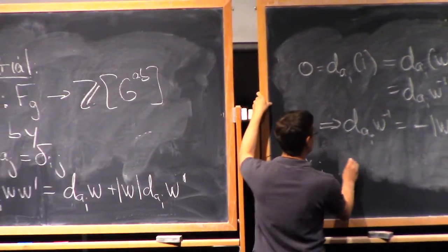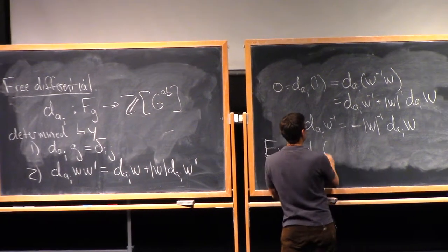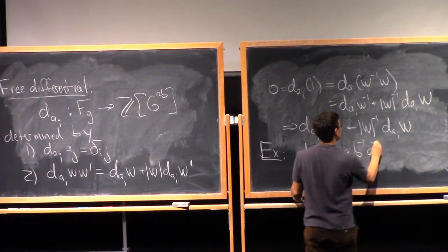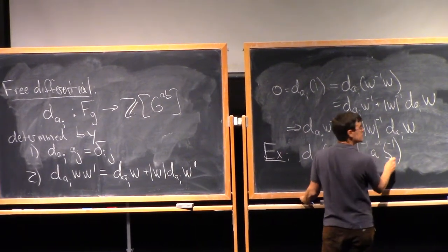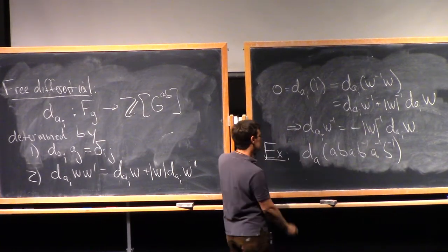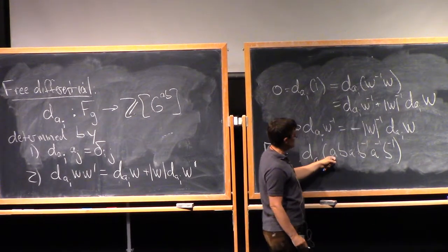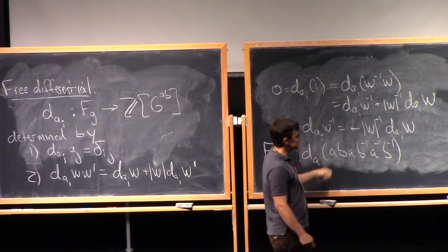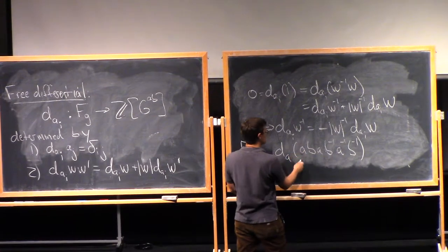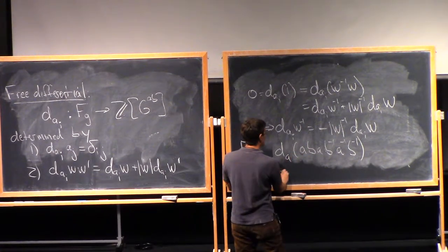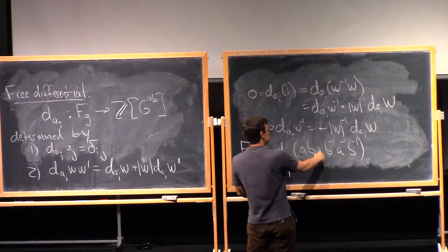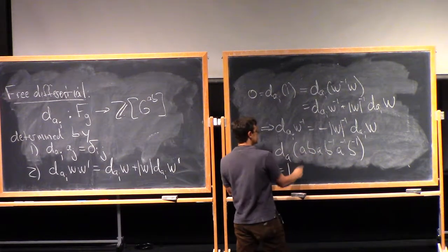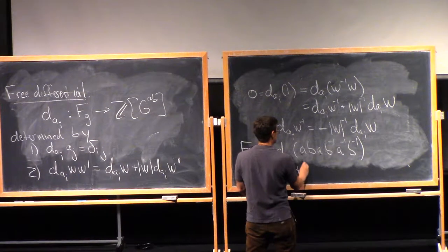If I want to take dA of the word ABA⁻¹B⁻¹A⁻¹B⁻¹, I just walk along the word and pick off every time I see an A. If I see an A, I take the abelianization of everything that comes before. Here there's nothing before, so I get 1. Here, these both come before — they both abelianize to T. This goes to T squared.